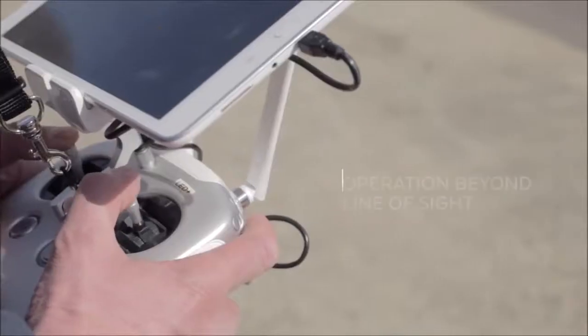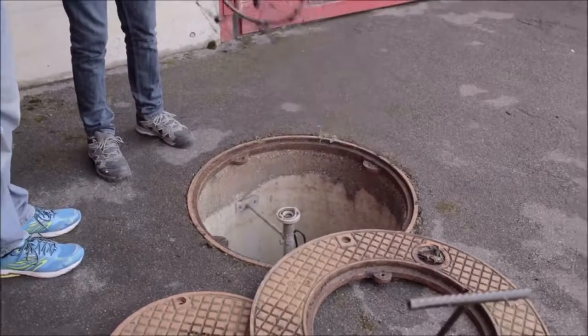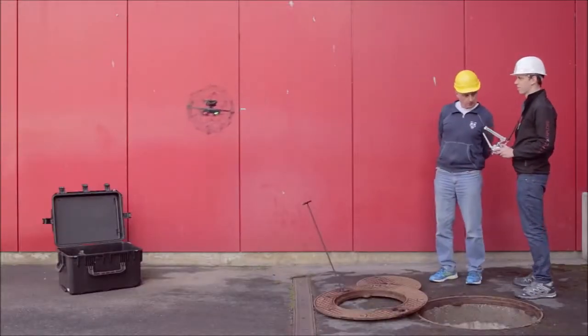It can be operated beyond line of sight using the robust video feedback to navigate. Instead of focusing on avoiding obstacles, you can use obstacles to find your way and roll on the surfaces in addition to flying.